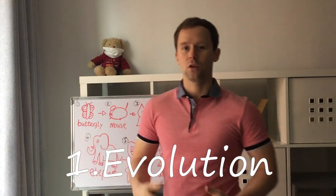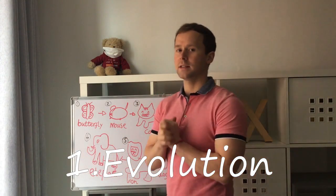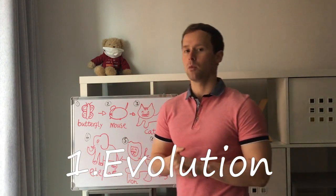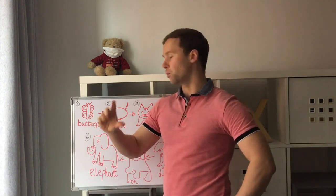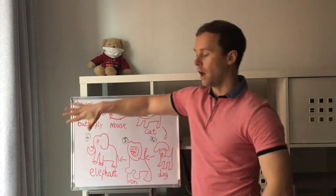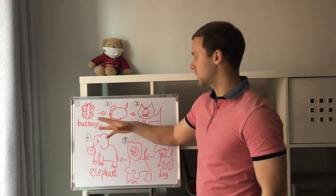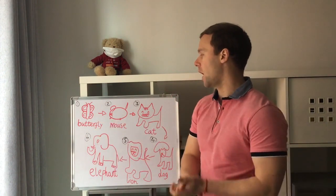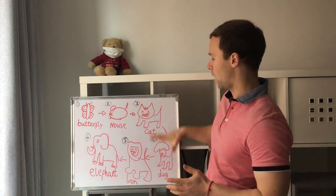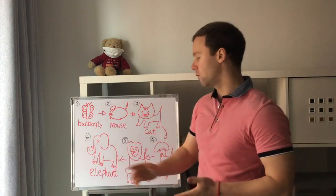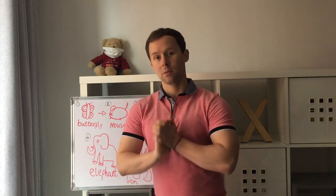Our first game is Evolution. To begin with, you want to elicit animals from your students. The first animal should be small and they should then gradually get bigger. So for example, here I have a butterfly and then gradually it will evolve to become an elephant.